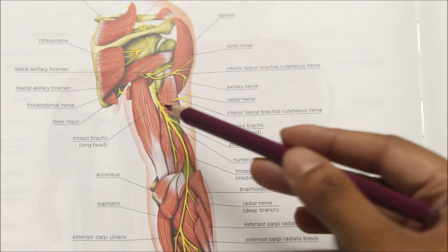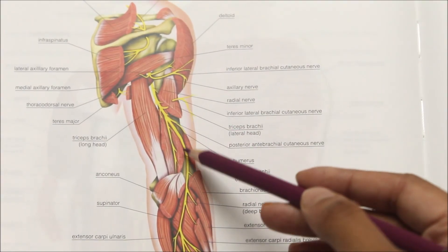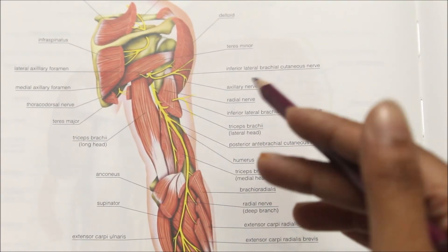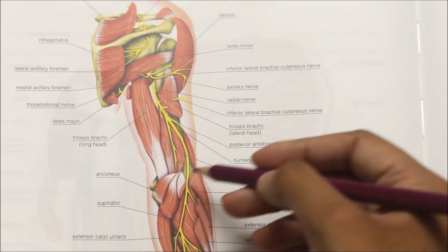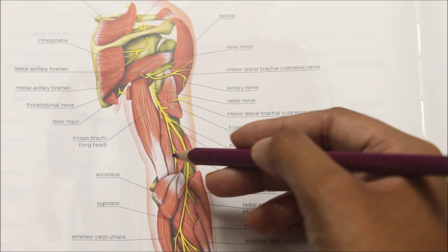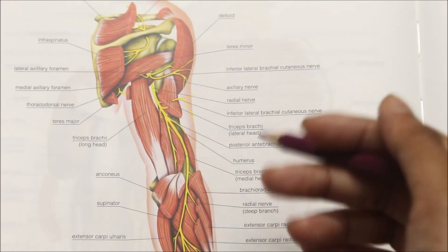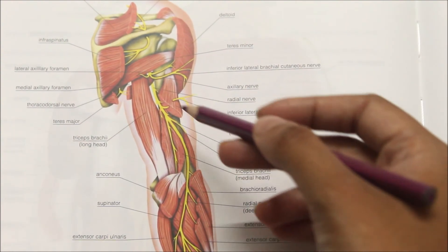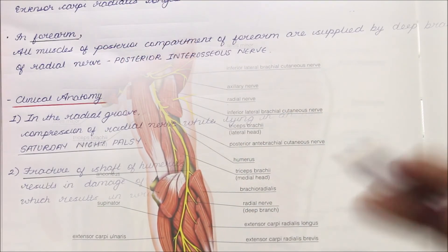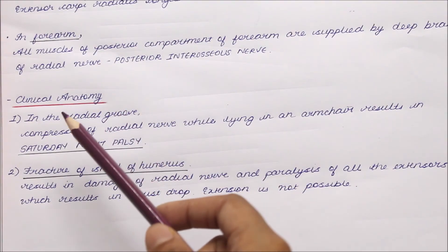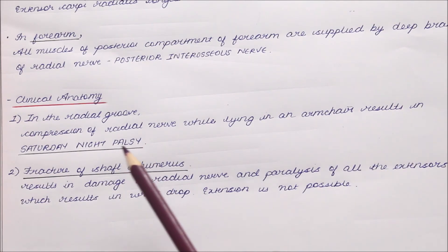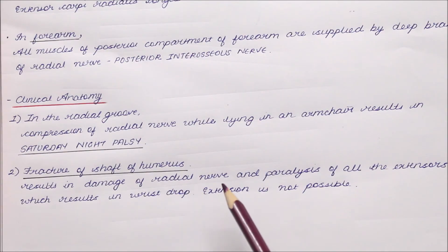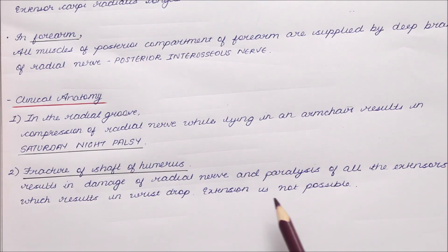Finally, looking at the clinical anatomy of the radial nerve: in the radial groove, compression of the radial nerve while lying in an armchair results in Saturday night palsy. Fracture of the shaft of the humerus results in damage to the radial nerve and paralysis of all the extensors, which results in wrist drop — extension movement is not possible.